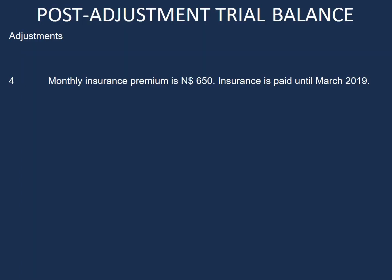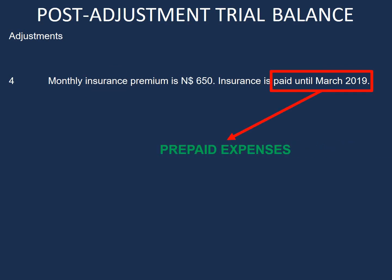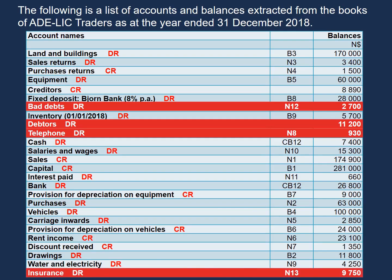Our next adjustment is monthly insurance premium is $650. Insurance is paid until March 2019. Remember, our year end is December 2018, so this is a prepayment. The two accounts we have are insurance and prepaid expenses. Prepaid expenses is not in our list of accounts, so we need to add that to our trial balance. Insurance is part of our list of accounts, so let's go ahead and highlight our insurance account. Now we know we need to do an adjustment for insurance.